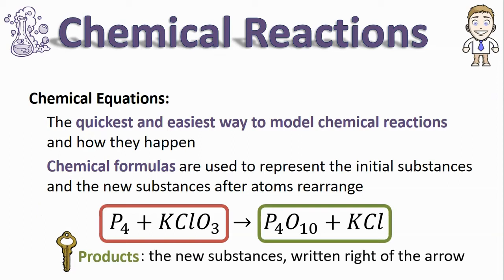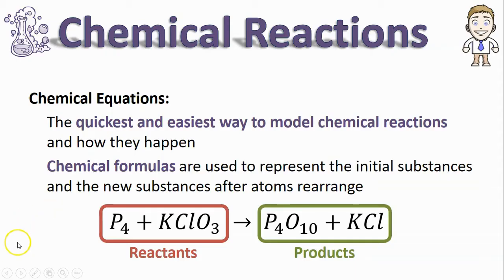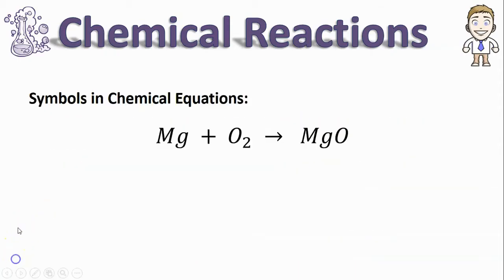On the other side of the arrow, we've got the products. The products are the new substances after all the atoms rearrange, and those products are always written on the right-hand side of the arrow. Now let's take a look at some of the symbols you might see in chemical equations that you might not be so familiar with.